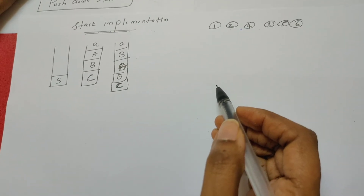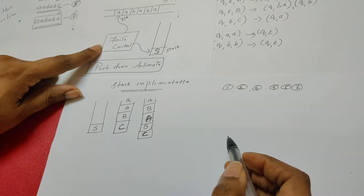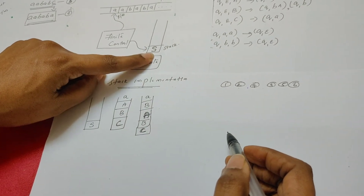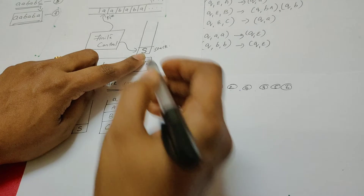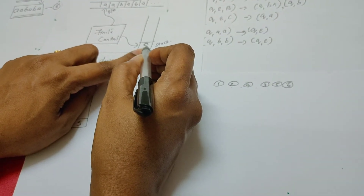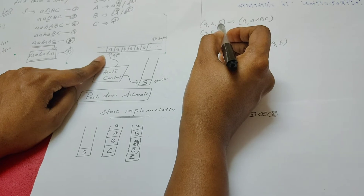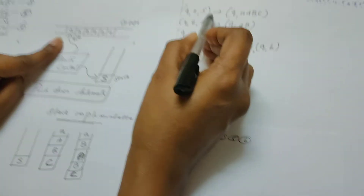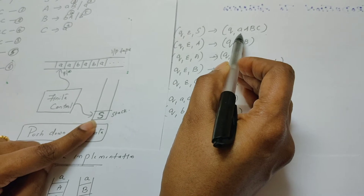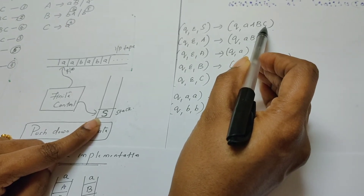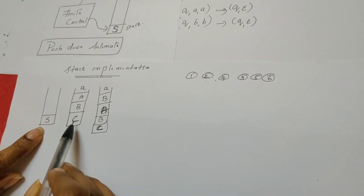The pushdown automata has the string a, a, b, a, b, a stored in the input tape. Initially, the stack contains the start symbol S. The input tape has terminal symbols, and the top of the stack contains S. Whenever there is a variable at the top of the stack, it does not read anything from the input tape. The variable is S, so we apply that rule: the state is Q, nothing is read from the input tape, and in place of S we push C, then B, then A, then terminal a onto the stack.